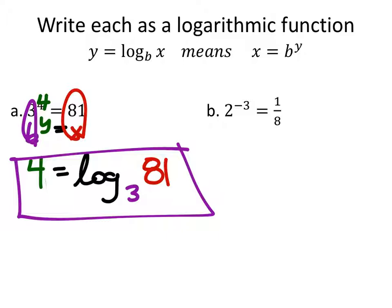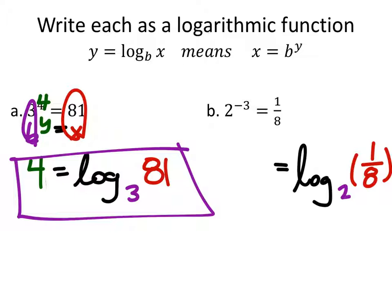Let's try the next one. It has to be equal to log base something. What is the base on this one? 2. So it's log base 2 of - and it can go in parentheses, it doesn't have to. What value goes in the parentheses? 1 eighth. And then this would equal the exponent, which was negative 3. That's it.